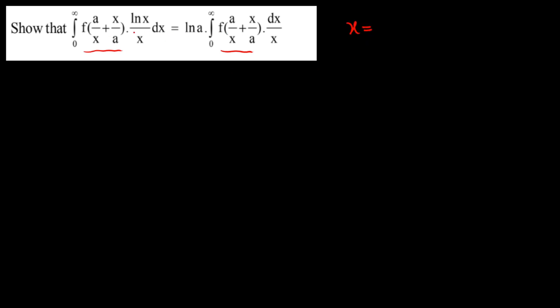The idea is we have to take a substitution in such a way that this function is kept intact as it is. So I'm going to take the substitution x = a·tan(θ). The differential dx will be equal to a·sec²(θ) dθ.